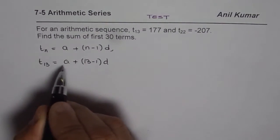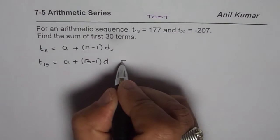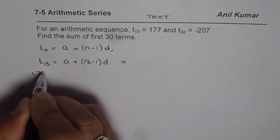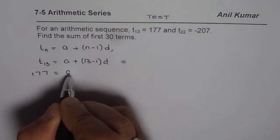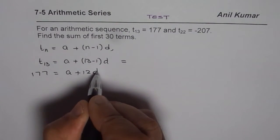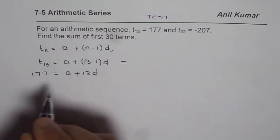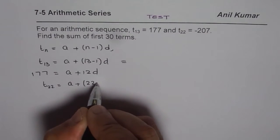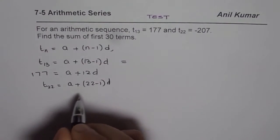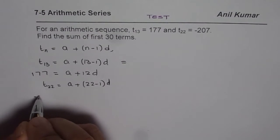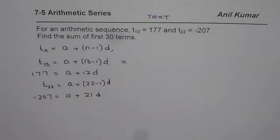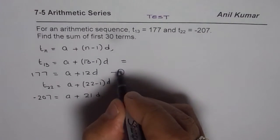This term equals 177, so 177 = a + 12d. That's equation 1. Now we also know the 22nd term: t₂₂ = a + (22-1)d. We get our second equation: -207 = a + 21d.